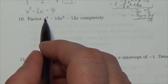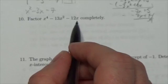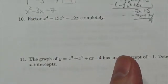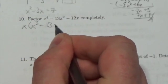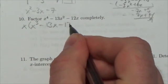Now, notice the x^4 - 13x^2 - 12x. Right off the bat here, I've got a common x, so I can take that out. I've got x^3 - 13x - 12.